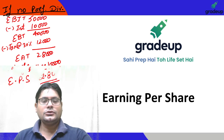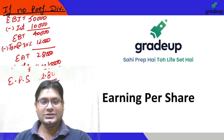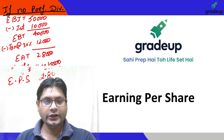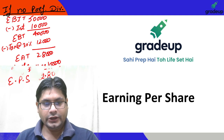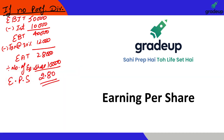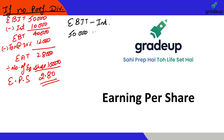Hello everyone. In this short video we will discuss the topic of Earnings Per Share. Basically, for EPS we can start from the income statement. I can write it as EBIT minus interest — so that is 50,000 minus 10,000, which is equal to 40,000. This is EBT (Earnings Before Tax).